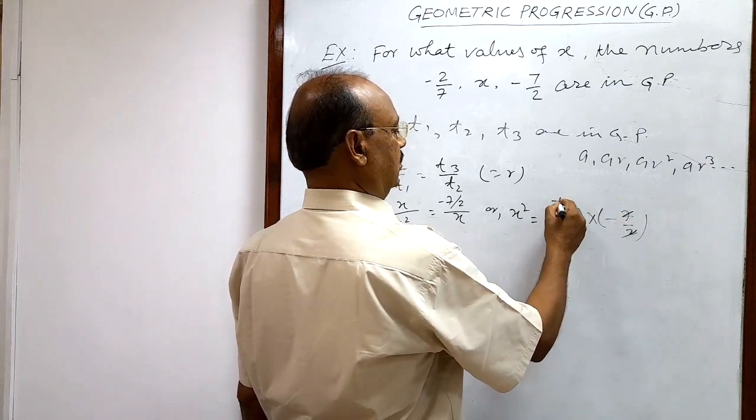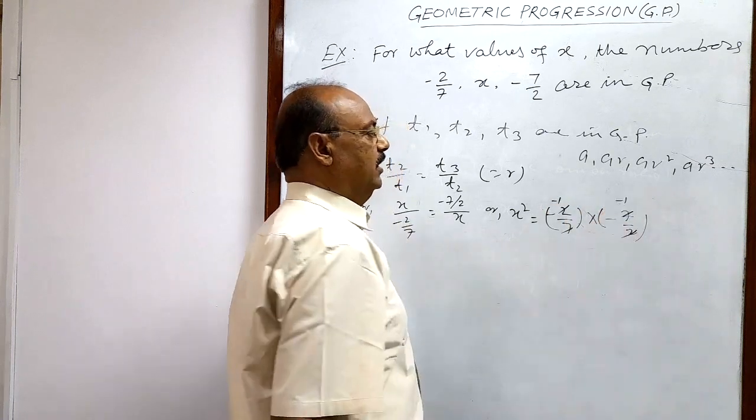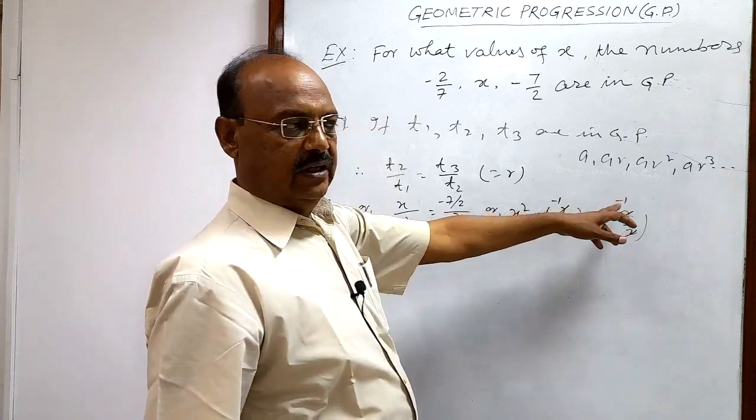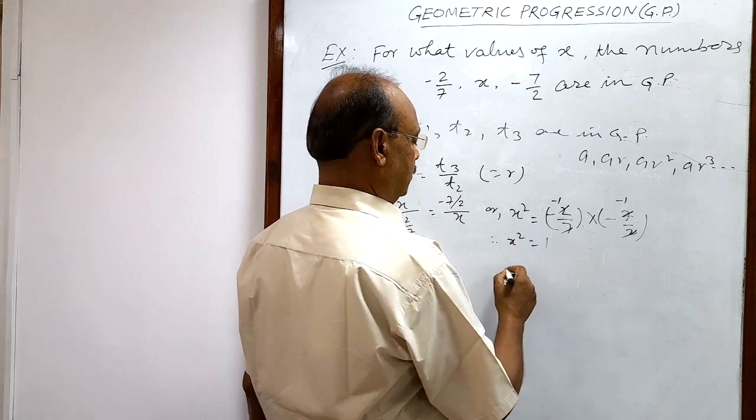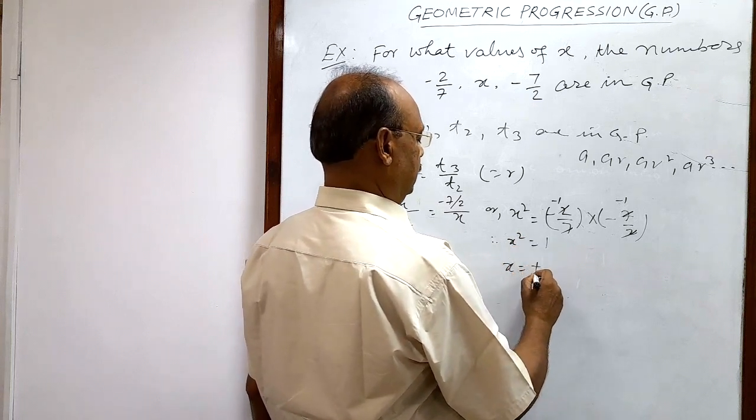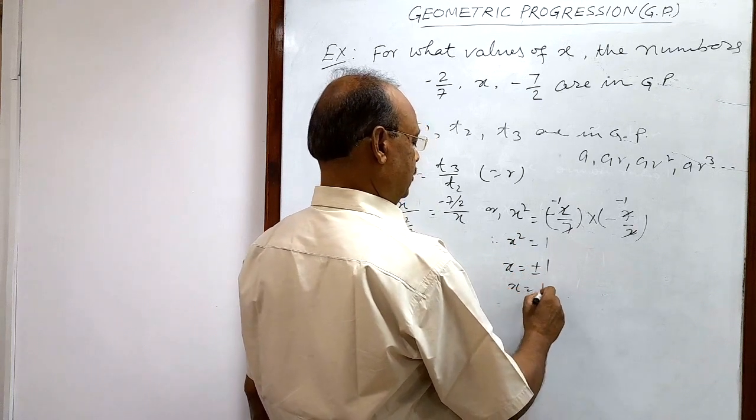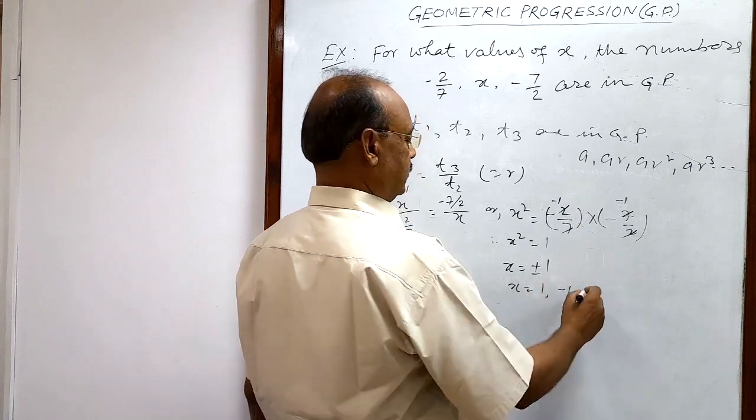This is minus 1 and this is also minus 1, and minus 1 times minus 1 is equal to plus 1. So we are getting here x squared is equal to 1, and x is equal to plus or minus 1. That is x is equal to plus 1 and minus 1.